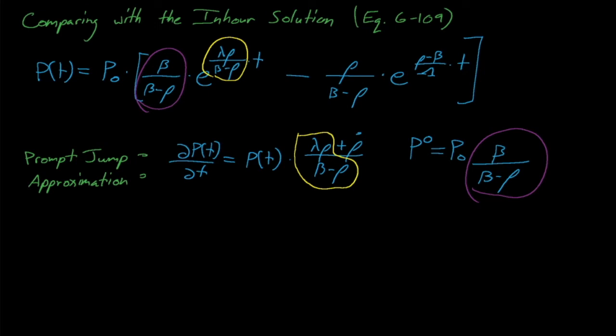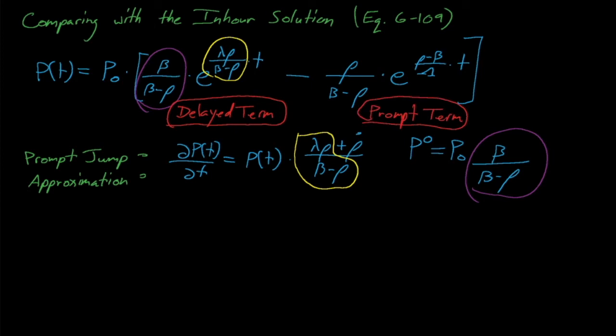So what's up with this rightmost term in the in-hour equation solution? Well, if you remember from our last lecture, this term describes the effect of prompt neutrons, where rho minus beta divided by lambda is equal to alpha prompt. This leftmost term describes the impact of delayed neutrons and the right-hand term describes the impact of prompt neutrons. For transients that are either subcritical or not prompt supercritical — so rho is less than beta — the exponent in the prompt term is negative, which means that the prompt term in the in-hour equation solution decays away rapidly, leaving only the delayed term to describe the reactor's asymptotic behavior.